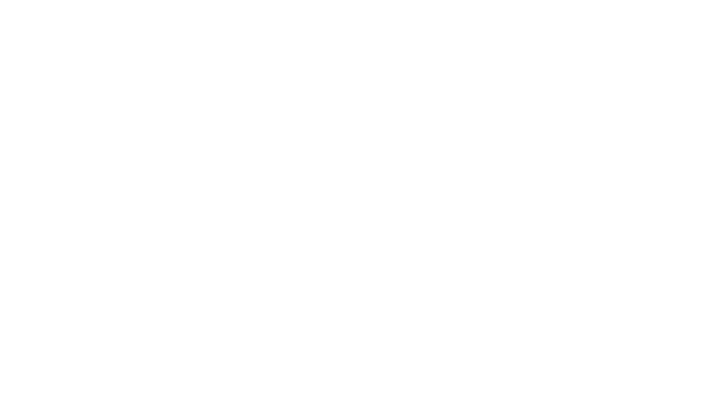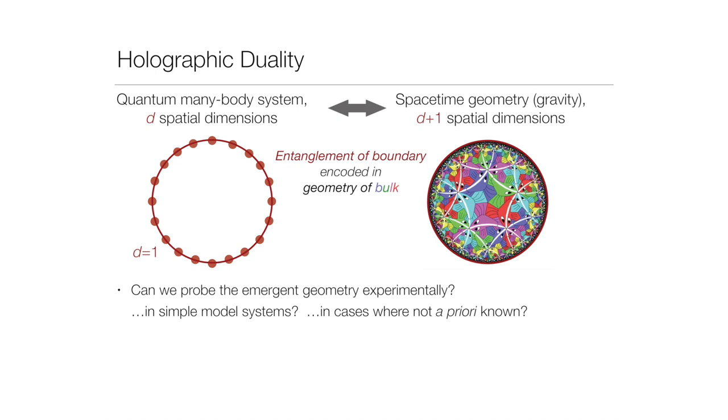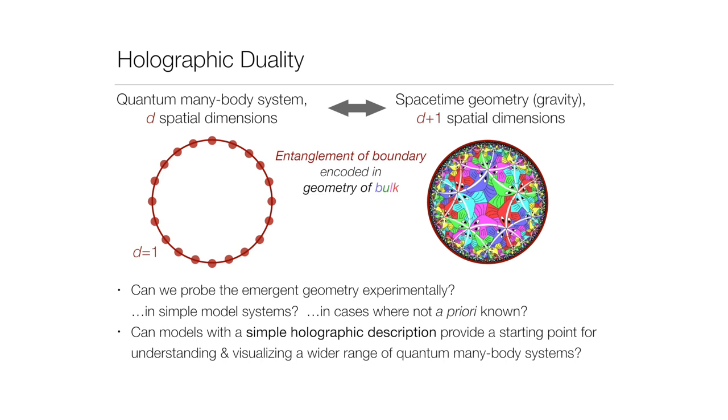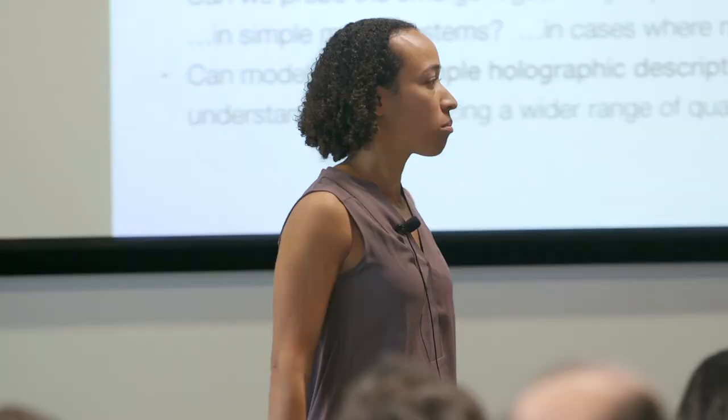That's at least a beautiful and elegant picture. As an experimentalist, I'd love to know: are there model systems we could build in a lab that would allow us to probe this type of emergent geometry? Could one ultimately identify a geometrical picture by some experimental probes, even if it's not a priori known? And in cases where there is some simple holographic description, could building models of that kind be a starting point for visualizing entanglement in ever more complex many-body systems?